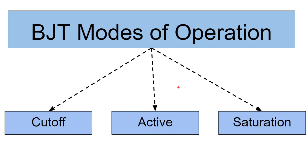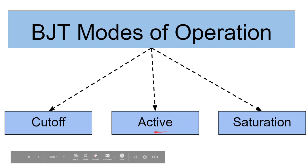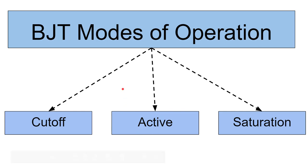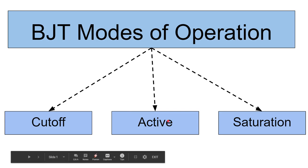When BJT is off, definitely BJT is in cutoff mode — no current is flowing. And when BJT is on, current is flowing and BJT is in saturation mode. The third mode is active mode: if there is a variable input at BJT and the output is also variable, meaning with the change in input the output is also changing, or BJT is working as an amplifier, then BJT is definitely in active mode. So let's start our today's lecture and discuss the details of these three modes.